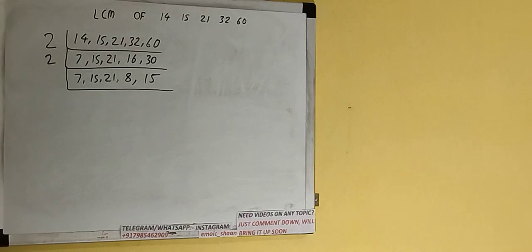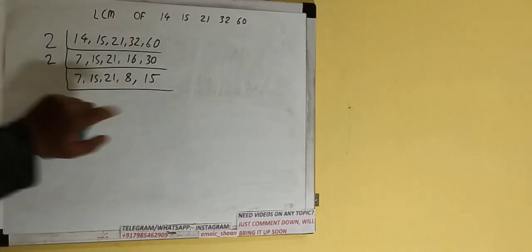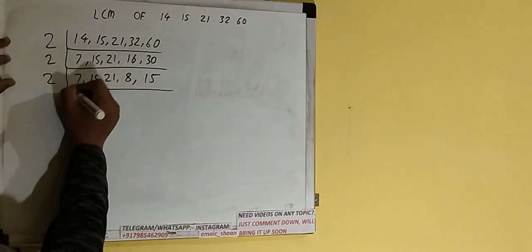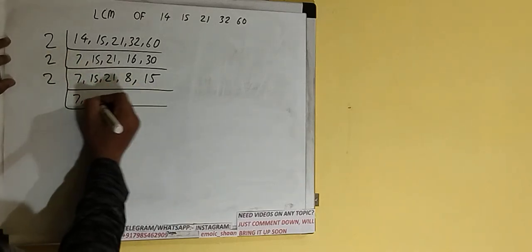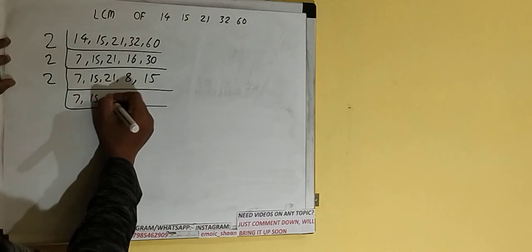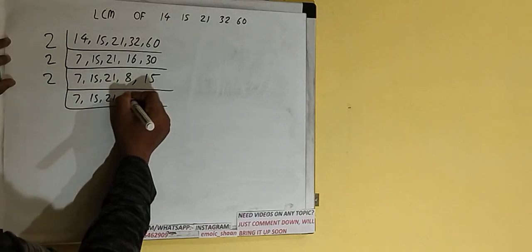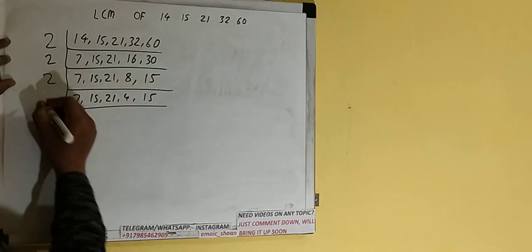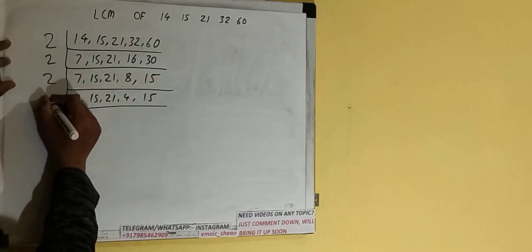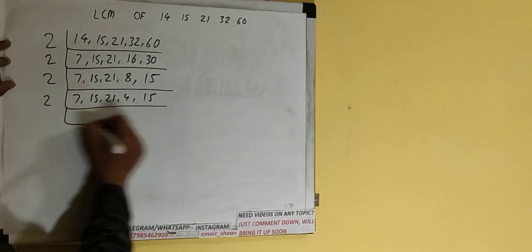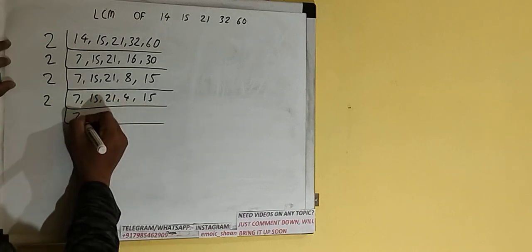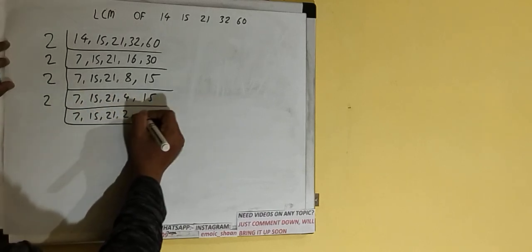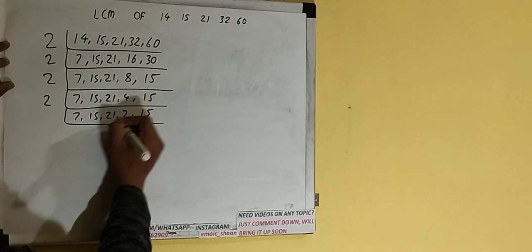Again the fourth number is divisible by 2, so we divide and get 7, 15, 21, 4, 15. The fourth number is still divisible by 2, so we divide again and get 7, 15, 21, 2, 15.